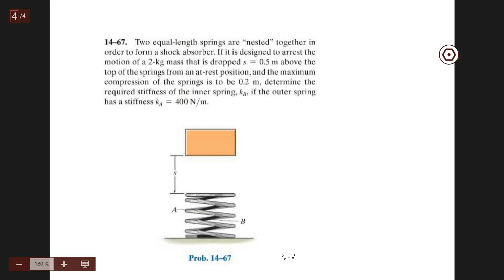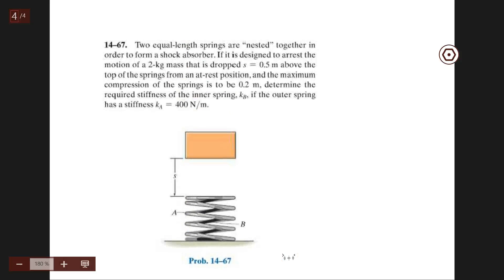That's something like this. Two equal length springs are nested together in order to form a shock absorber. It is designed to arrest the motion of a 2 kg mass that is dropped 0.5m above the top of the spring from an at-rest position, and the maximum compression is 0.2m. Determine the required stiffness of the inner spring if the outer spring has a stiffness of...